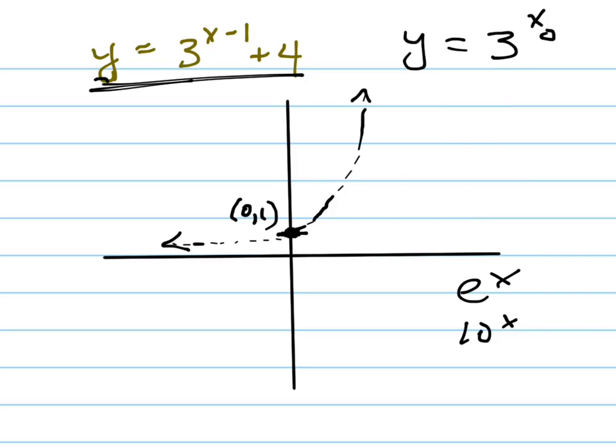So now let's take this graph and let's do our transformations. What does this minus 1 do to it? Shift it to the right. Shifts it to the right 1. So now my graph is to the right 1. And what does the plus 4 do to it? Up 4. Shifts it up 4.